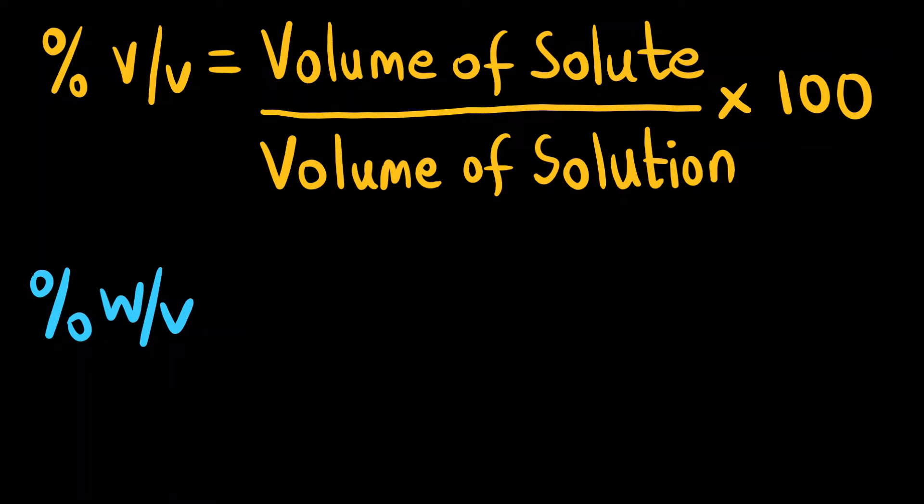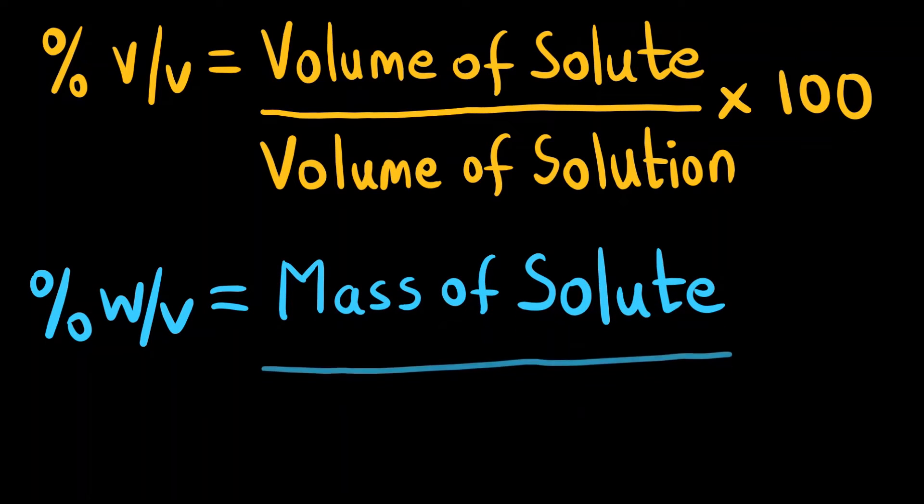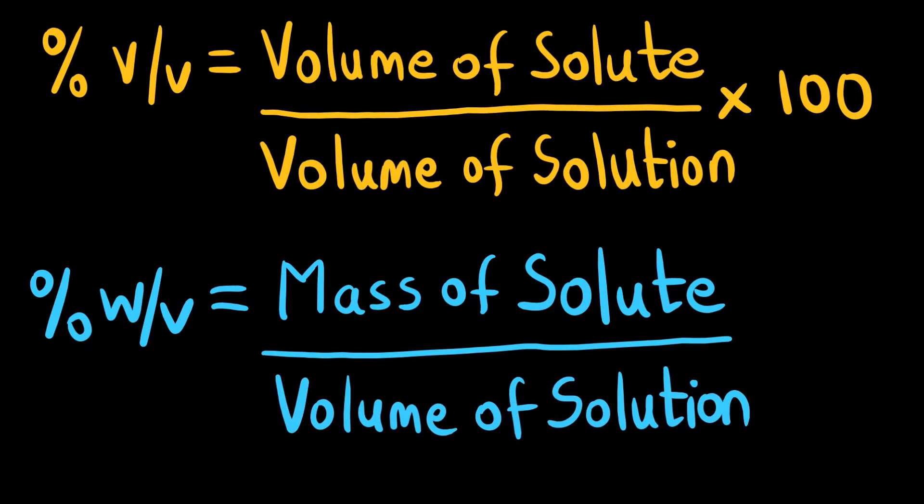What is percentage weight by volume? It is mass of the solute divided by volume of the solution times 100. So these are the two important formulas for percentage volume by volume and percentage weight by volume.